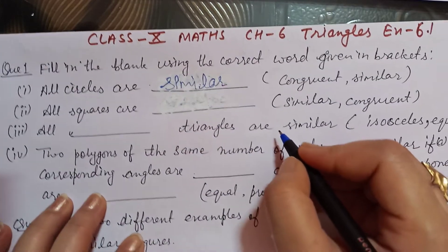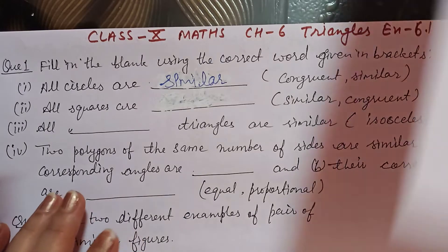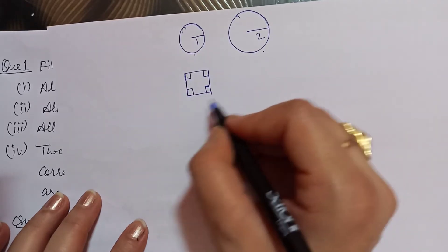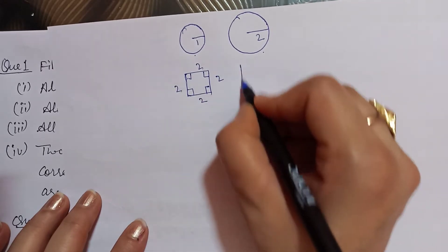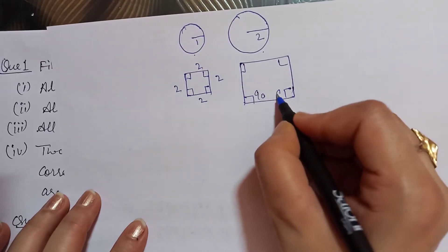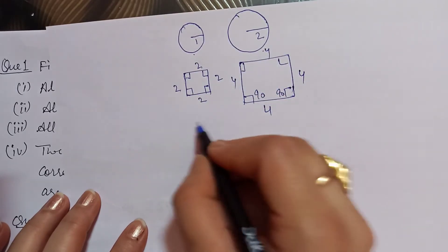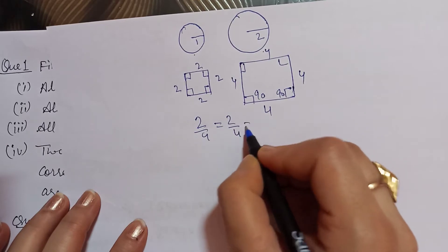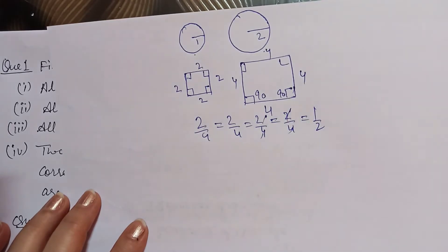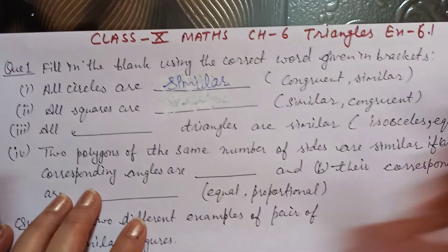Second blank: all squares are similar or congruent. All squares will be similar. The angles are 90 degrees and the sides are equal. We have taken a big square — again, angles are 90 degrees and sides are equal. So all squares are similar figures; they will not be congruent because the size is not the same.